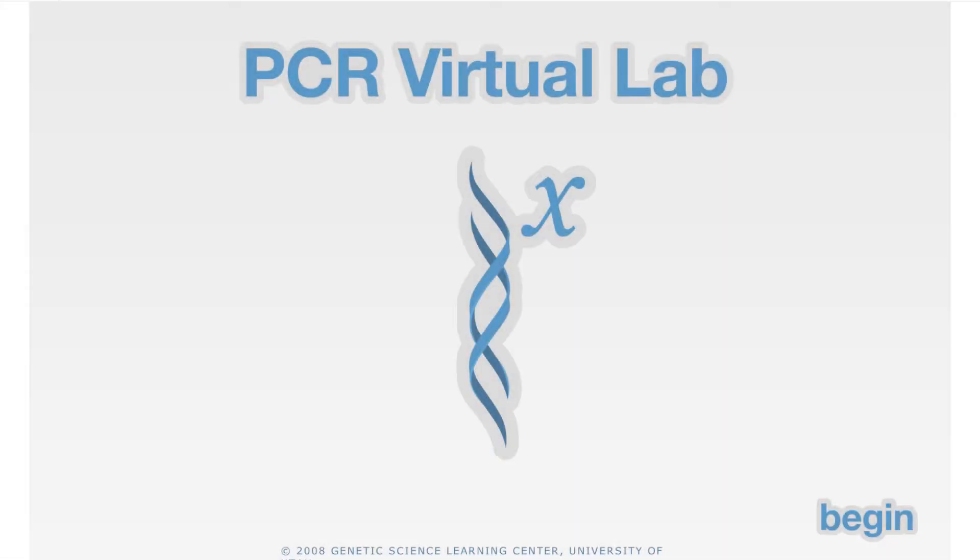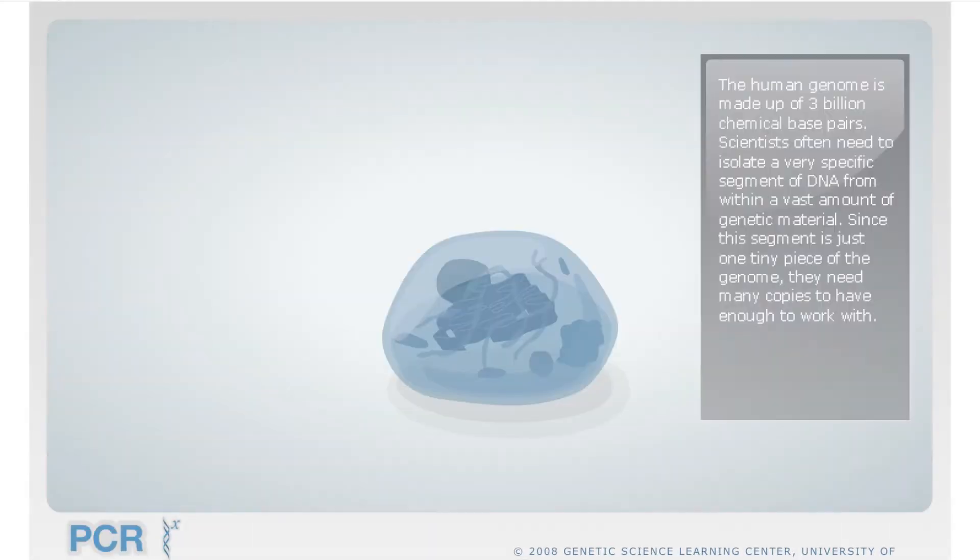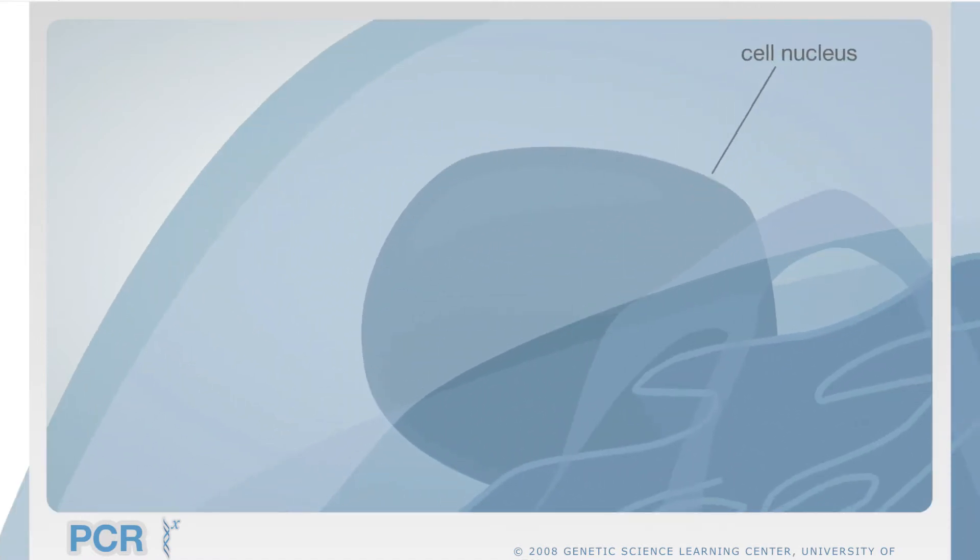Polymerase Chain Reaction or PCR is used to amplify small amounts of DNA samples or specific segments of interest so that you can have enough copies in your genetic experiments.